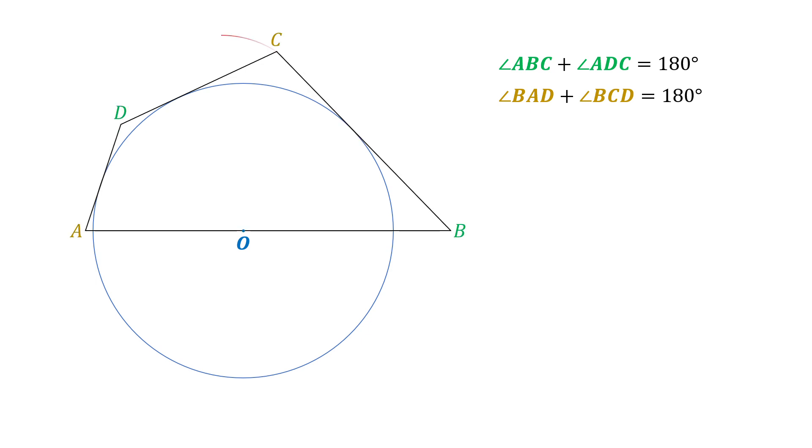To do this, we will draw a circumcircle through points O, C, and D. This circumcircle intersects AB at another point, which we call T. Our goal is to prove that triangles ADT and triangle BCT are isosceles. If we can prove this, we will reach the solution.